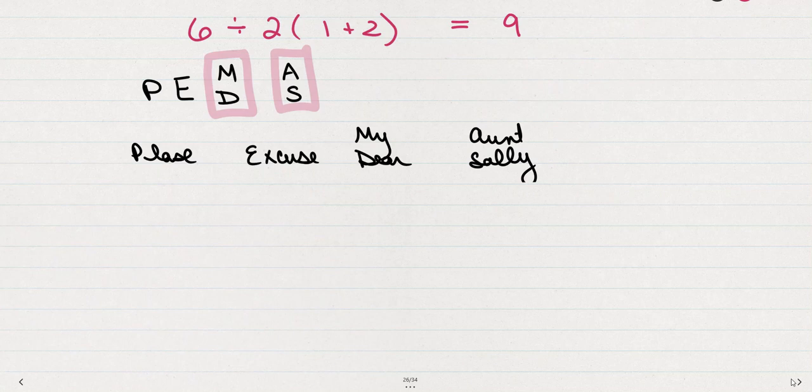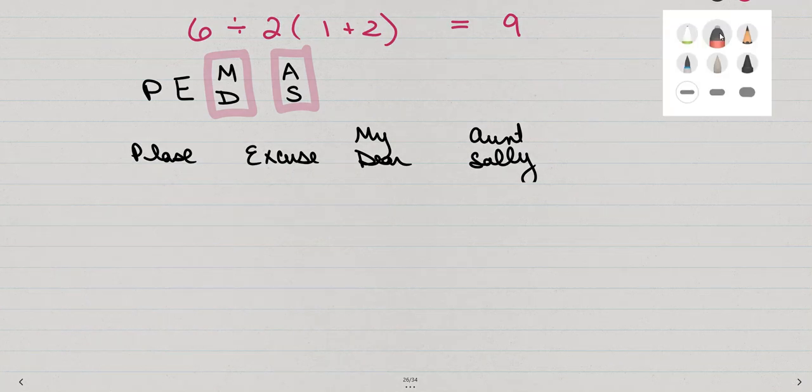Most people are familiar with PEMDAS or Please Excuse My Dear Aunt Sally. But a common error that is often made is thinking that the M has to come before the D and the A has to come before the S.